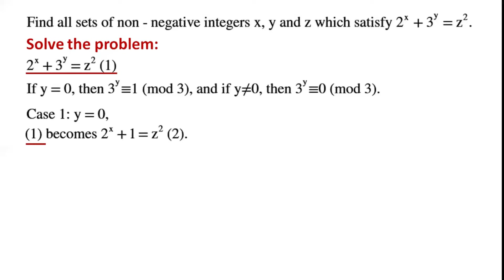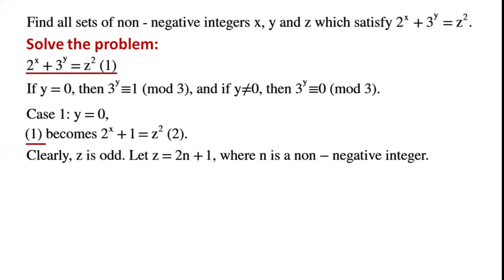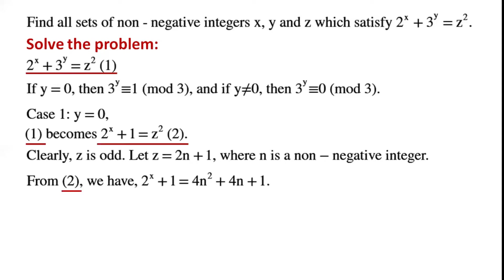Equation 1 becomes 2 to the power of x plus 1 equals z squared. Clearly z is odd, so z equals 2n plus 1, where n is a non-negative integer. From equation 2, we have 2 to the power of x plus 1 equals 4n squared plus 4n plus 1. Cancelling 1 from both sides, 4n squared plus 4n can be factorised as 4n times (n plus 1).